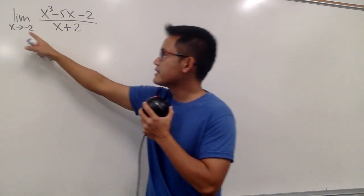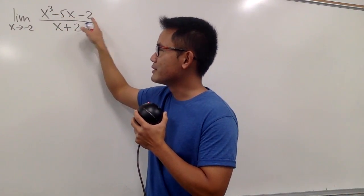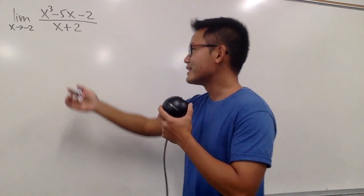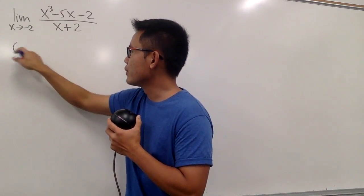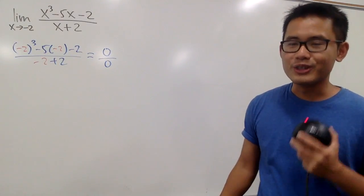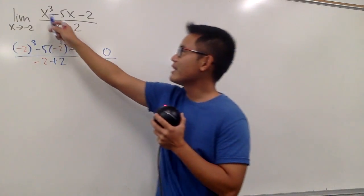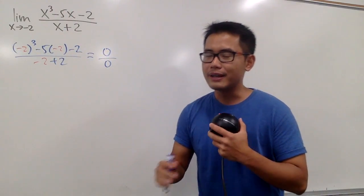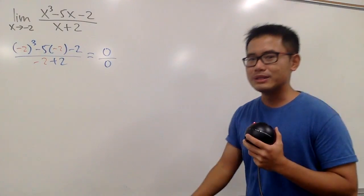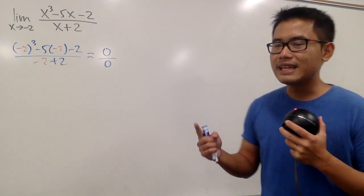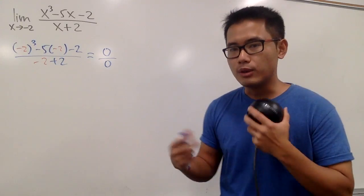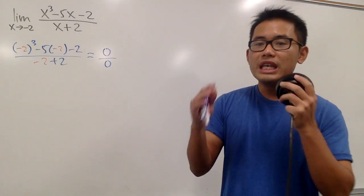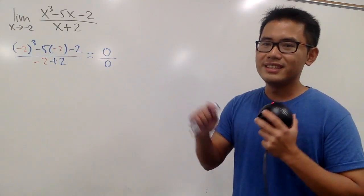Now we calculate the limit as x goes to negative 2 of (x³ minus 5x minus 2) over (x plus 2). Plugging in negative 2 gives 0 over 0 — we have to do more work. The top is a trinomial with a third power, so we can't do the usual factoring. In this case, we can do polynomial long division, which will always work. I'll show you that here.